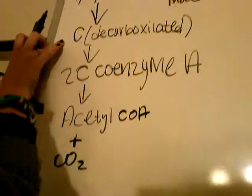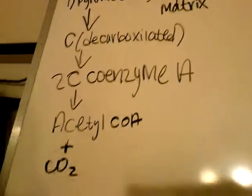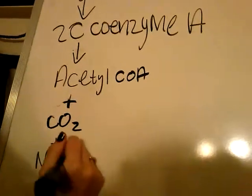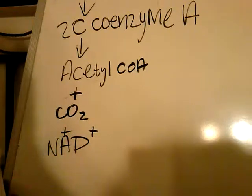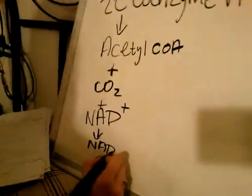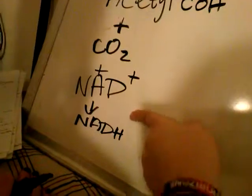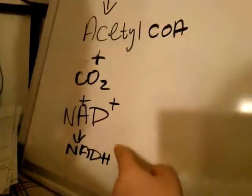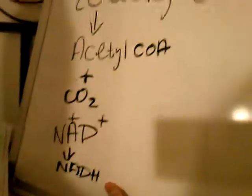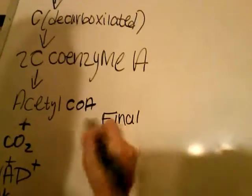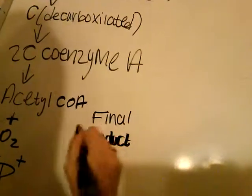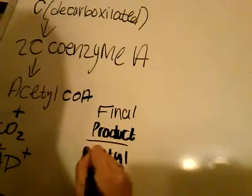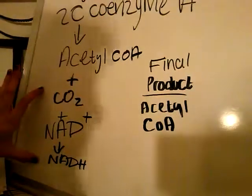And also, as the carbon is decarboxylated, it also releases energy. NAD+ is converted into NADH — that H is a proton, and these come by and pick it up. So NADH is produced. The final product that's most important here is Acetyl Co-A, but you should probably also know that there's CO2 and NADH, because those will be used later.